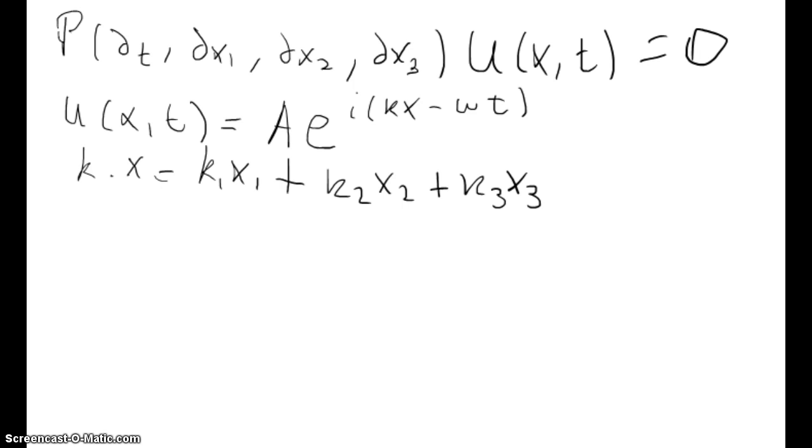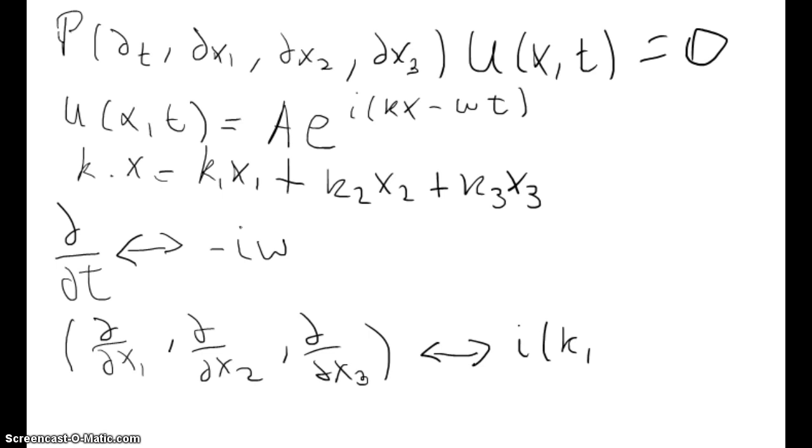If we apply a partial derivative, for example a time partial derivative to our solution, if we apply d/dt to our plane-wave solution, you will always have an additional coefficient minus i omega. And when you apply the other partial derivatives d/dx1, d/dx2, d/dx3, for each of them you will have a different coefficient: i k1, i k2, i k3.